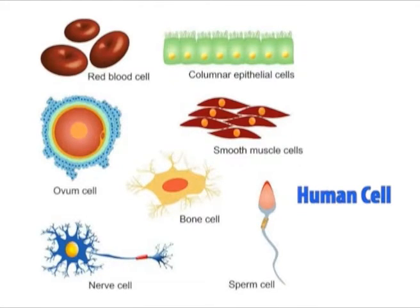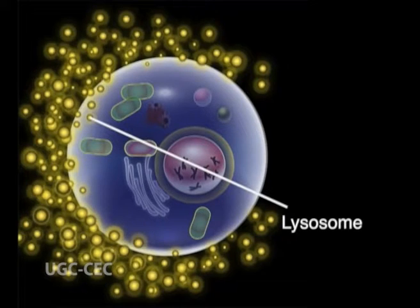Lysosomes thus represent morphologically diverse organelles defined by the common function of degrading intracellular material. Interestingly, the number of lysosomes in cells varies with structure and functions. Many human cells contain hundreds of lysosomes, while phagocytic cells often contain thousands of lysosomes.